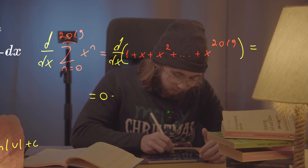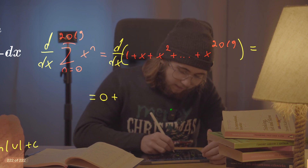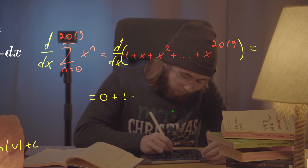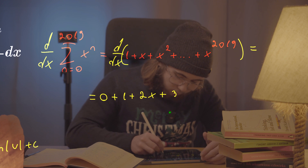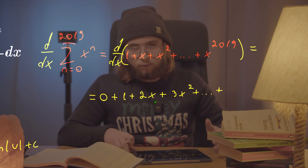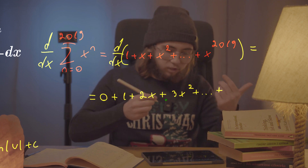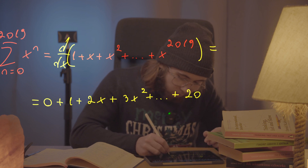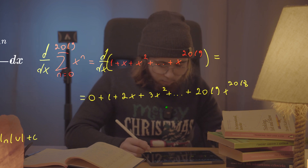So I get zero; the derivative of x is just 1; the derivative of x squared is going to be 2x; x cubed is going to be 3x squared; and so on and so forth, until I get to the derivative of x to the 2019, which is 2019 times x to the power of 2018.